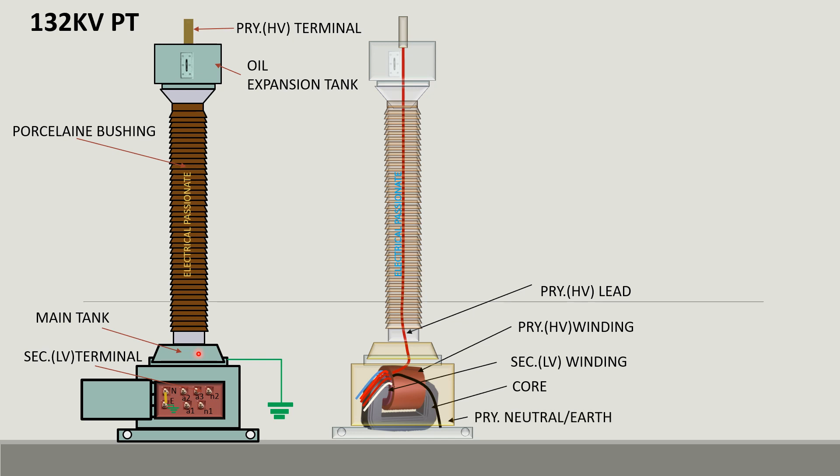One end of the primary lead of the HV side connected with HV terminal is also insulated. Another end of primary lead is connected with HV winding of the potential transformer, and other end of the HV winding is connected with body for earthing through solid link.